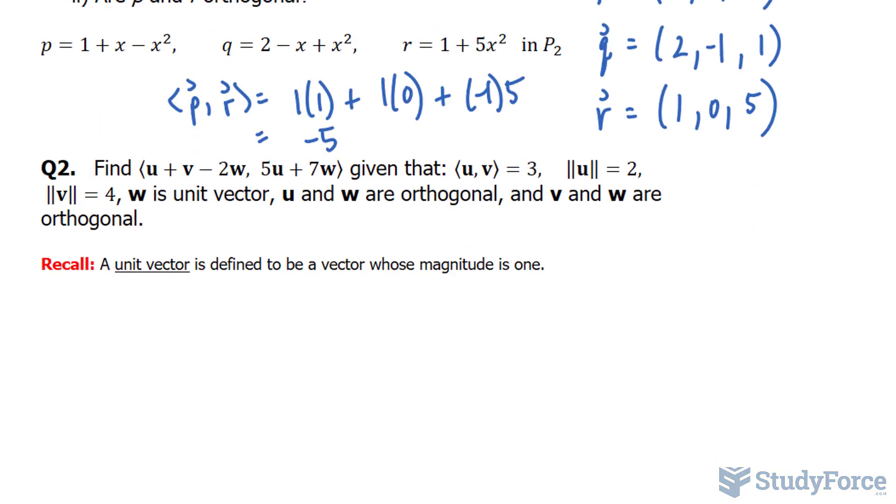In question number 2, find the inner product of this expression and that expression, given that the inner product of u and v is equal to 3, the norm of u is equal to 2 (that's the geometric length of u), and the norm of v is equal to 4. Also, w is a unit vector. Remember what a unit vector is: it's one that is defined as a vector whose magnitude is 1.